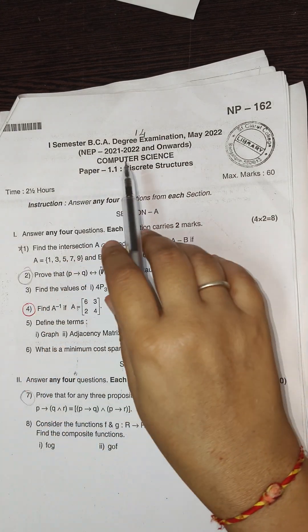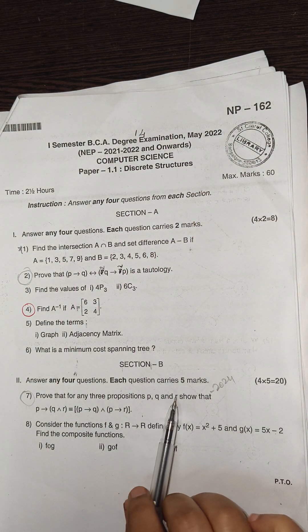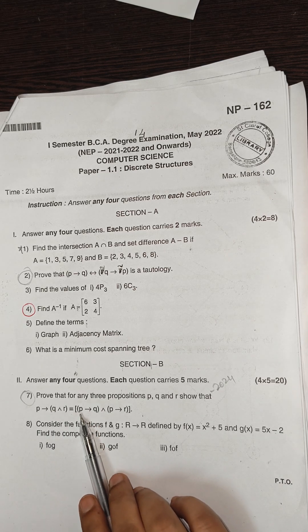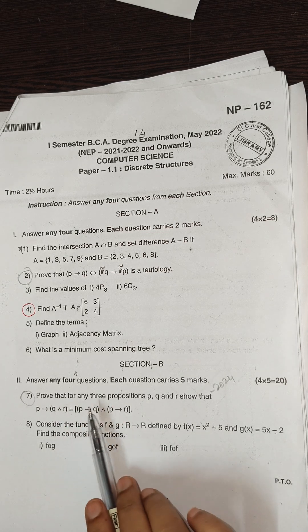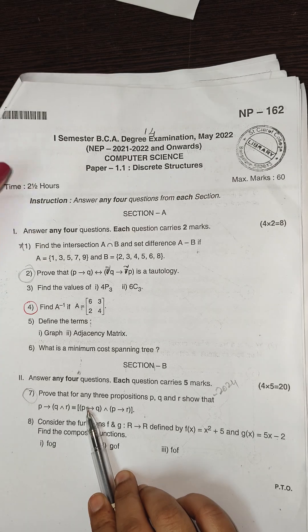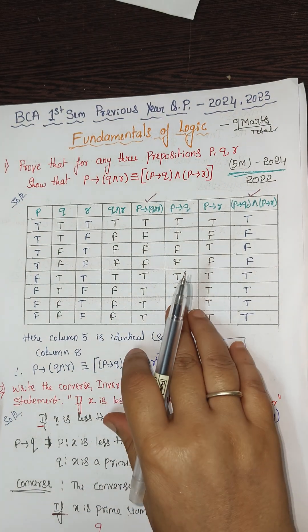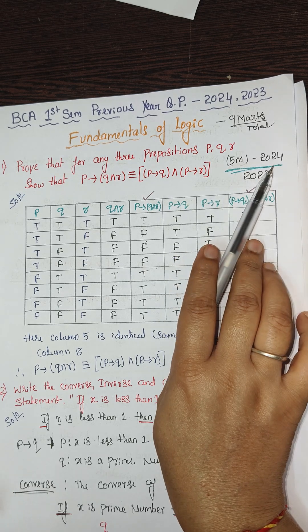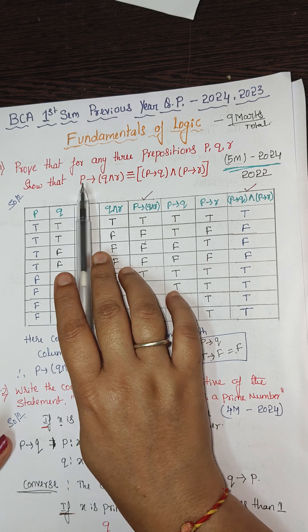The next five-marks question from 2022: prove that for any three propositions p, q, r, p→(q∧r) is equivalent to (p→q)∧(p→r). We need to show the left side equals the right side — they are logically equivalent. This question also appeared in 2024; I already solved it. There are three propositions p, q, r.